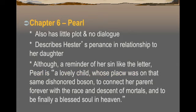In Chapter 6, we introduce the character of Pearl. She has very little plot and no dialogue because at this stage she's a very small infant child. It continues with Hester's penance in relation to her daughter, because Pearl is a symbol of her sin. Although she is a reminder of the sin-like letter, Pearl is a lovely child whose place was on that same dishonored bosom, to connect her parent forever with the race and descent of mortals and to finally be a blessed soul in heaven. So in spite of the Scarlet Letter A being a sign of pure evil, Pearl — though a symbol of the sin — is a very beautiful part, and she's going to be a blessed soul in heaven.